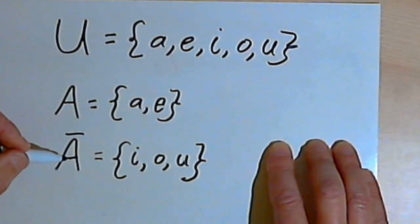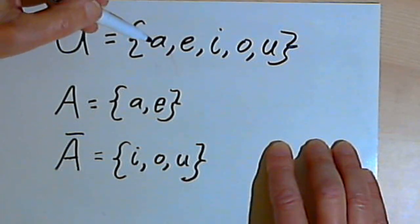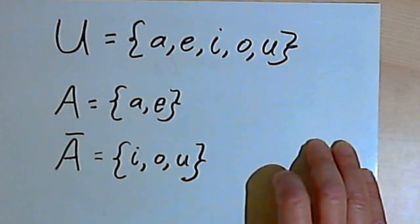The complement of A is also a subset of U, and if I combined A and the complement of A, I would have all of the letters that are in the universal set. Here's another example.